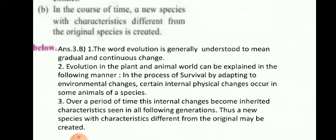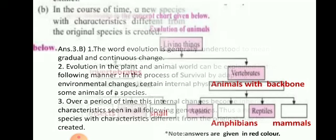Second give reason: in the course of time, a new species with characteristics different from the original species is created. The word evolution is generally understood to mean gradual and continuous change. In the process of survival by adapting to environmental changes, certain internal physical changes occur in some animals of the species over a period of time. These internal changes become inherited characteristics seen in all following generations, thus a new species with characteristics different from the original may be created.